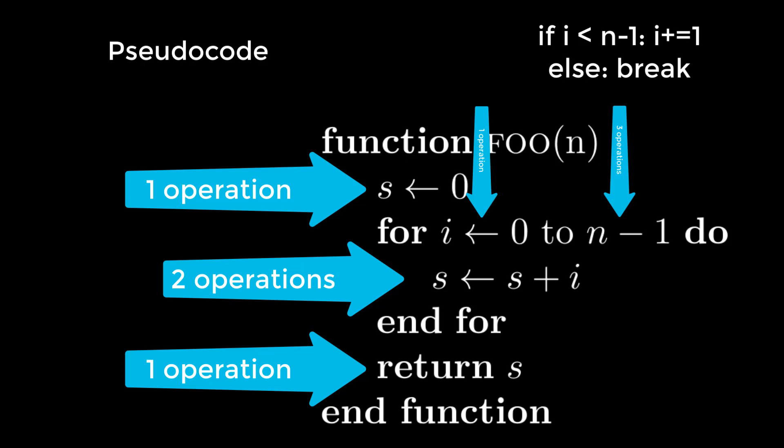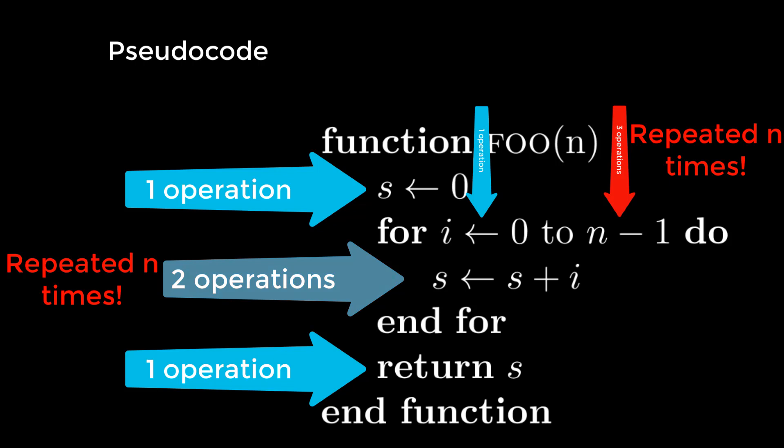And how often do we do this loop then? Well, we do it for the number 0, for the number 1, for 2, for 3, all the way up to n minus 1. So we do these operations n times. But hang on, that means that s equals s plus i also happens n times. I see. So now let's try to add all of that together.